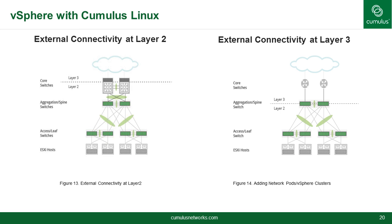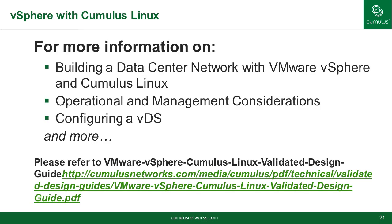Another concept to keep in mind is external connectivity — there are two options. One is at layer 2 with routing and gateway services provided outside the cluster or by NSX or vSphere. The second is at layer 3 with routing services provided by the spine switches. For more information on building a data center with VMware vSphere and Cumulus Linux, we have a Cumulus Linux Validated Design Guide for VMware vSphere — the link is on the slide, or you can do a Google search and find it easily.